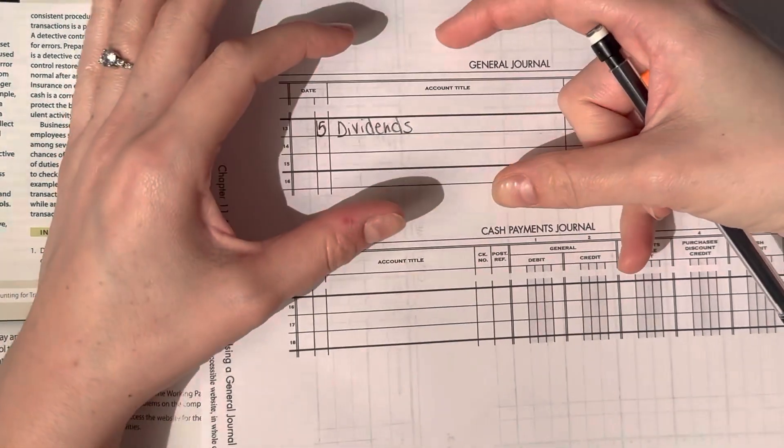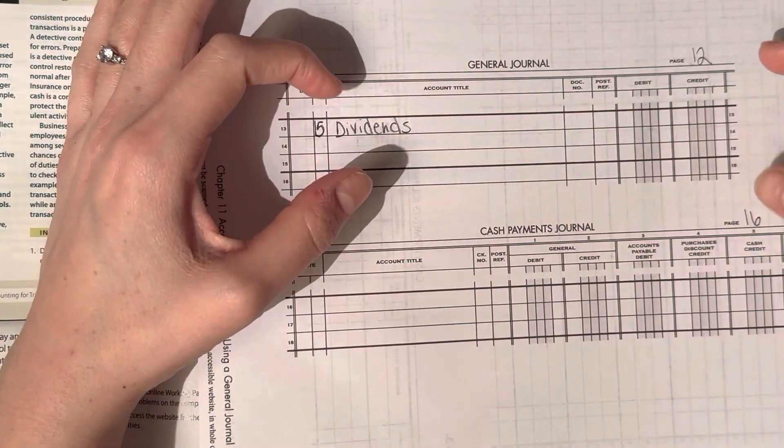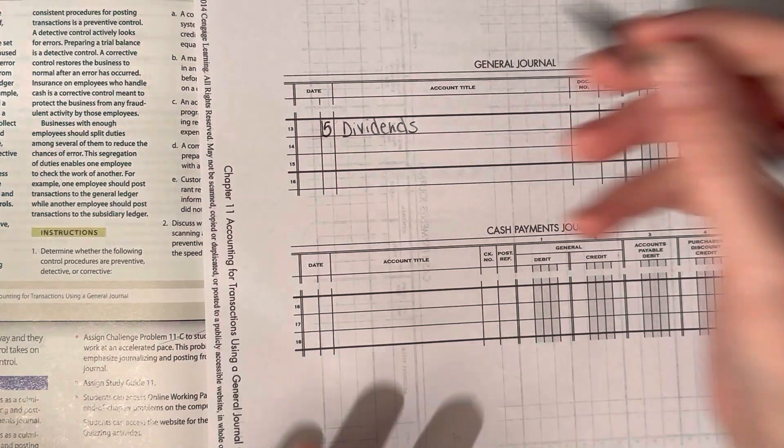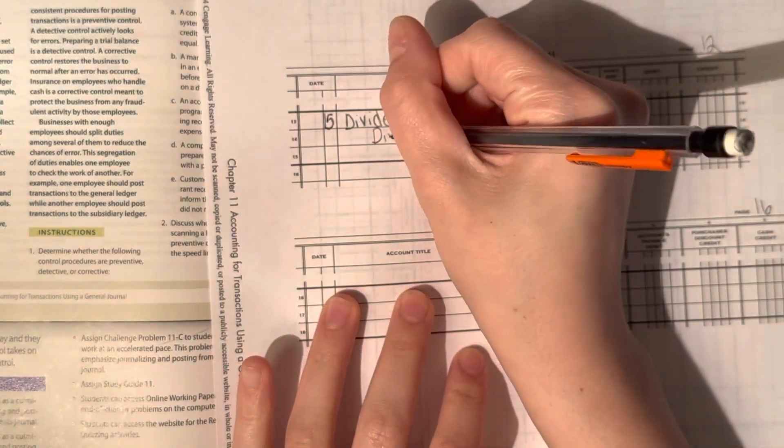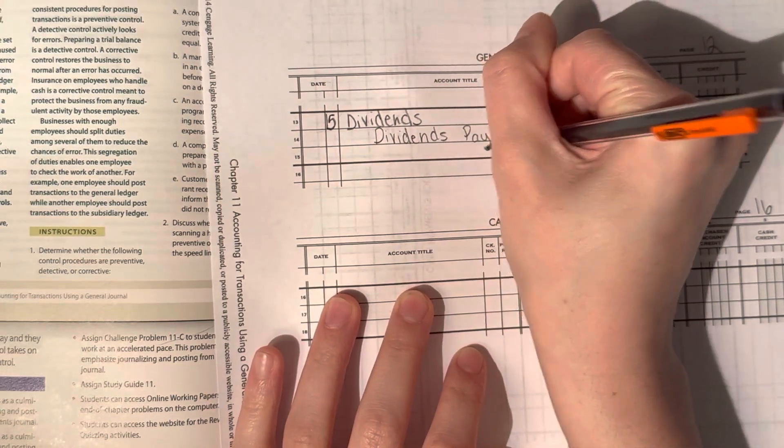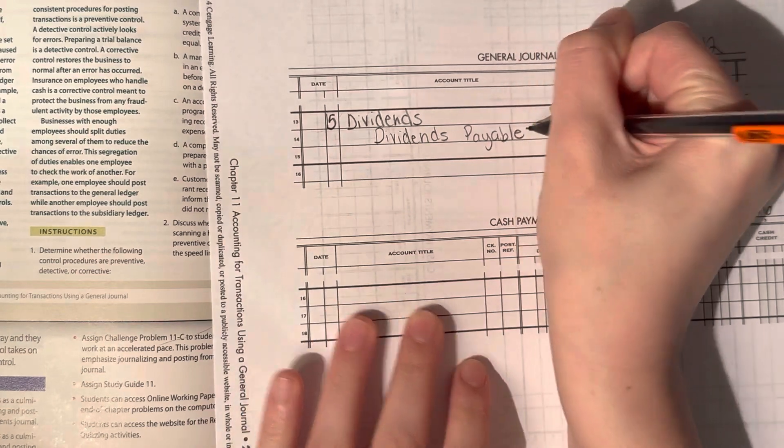They give you a clip of the general journal and the cash payments journal, not the whole page. So anyways, dividends and dividends payable. That's what we do when we declare a dividend. There's nothing else. That's just what we do.